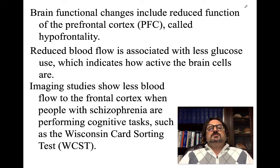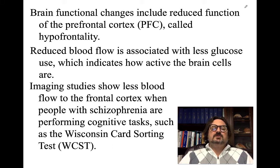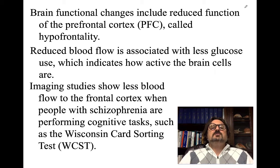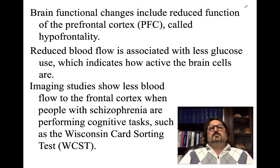Functional changes include reduced function in the prefrontal cortex, called hypofrontality. The prefrontal cortex is not atrophied, but it doesn't function as much. Reduced blood flow is associated with less glucose use, which indicates how active the brain cells are. We can use positron emission tomography — PET scans — to measure what parts of the brain are shifting into fifth gear versus first gear.